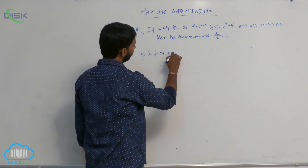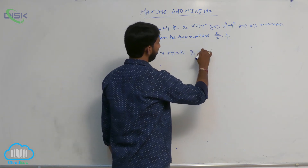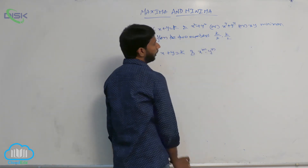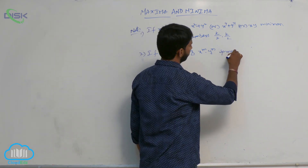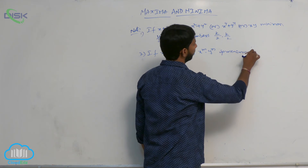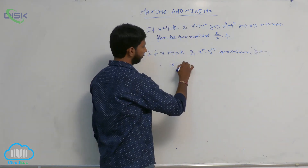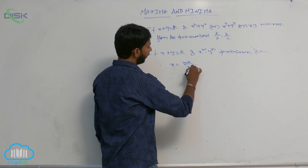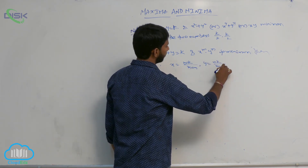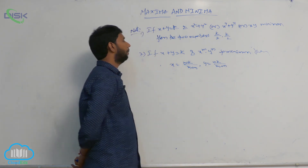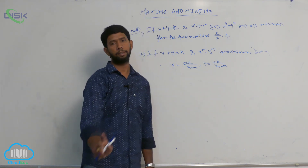Further, if x plus y equals k and x to the power m times y to the power n is minimum, then x equals mk divided by (m plus n) and y equals nk divided by (m plus n).